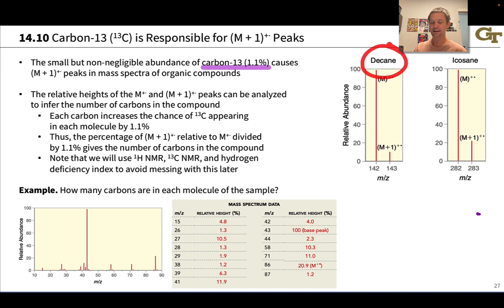For example, decane has 10 carbons, C10H22, and we see about a 10 to 1 ratio of M to M+1 peaks in the mass spectrum of decane.